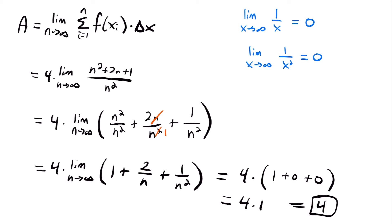The area under the curve f(x) = x³ on the interval from 0 to 2 is 4. This is no longer an approximation — this is the exact value of the area under the function from 0 to 2. We found this using the limit definition of area with right endpoints as the number of rectangles n approached infinity. Using left endpoints would give the same answer but would be a much harder calculation.